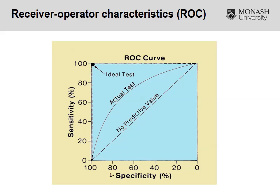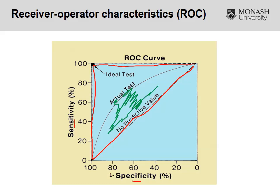Here we have an example of a ROC curve, with sensitivity on the y-axis and one minus specificity on the x-axis. There are three lines shown. A test that plots along the 45-degree diagonal line is essentially useless — no predictive value, like having a likelihood ratio of one. What we want to see is something that resembles the ideal test — great at ruling in and ruling out the disease. In reality, most tests fall somewhere in between. The higher the area under this curve, the better the test.